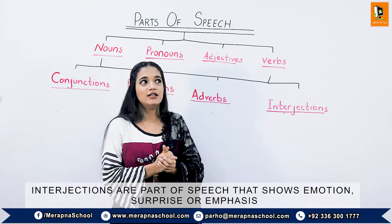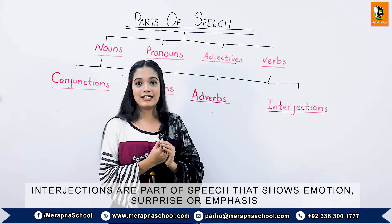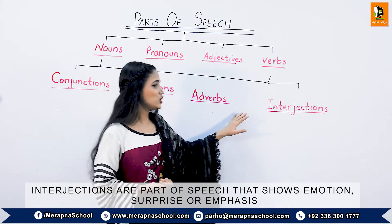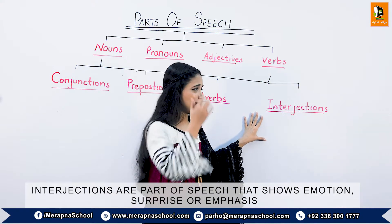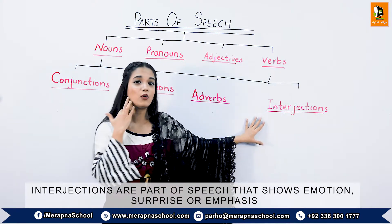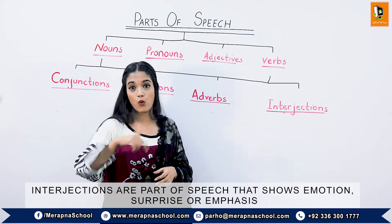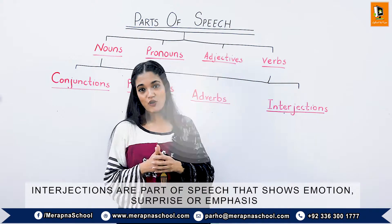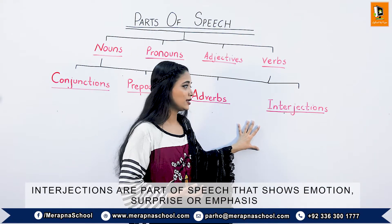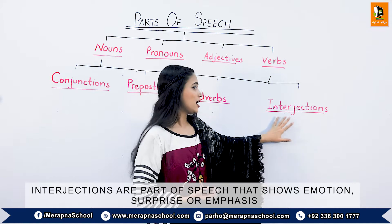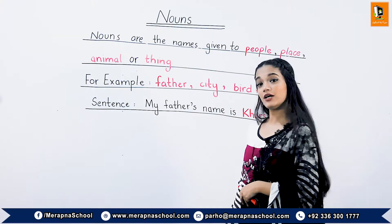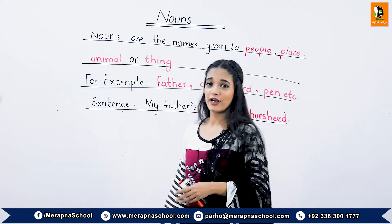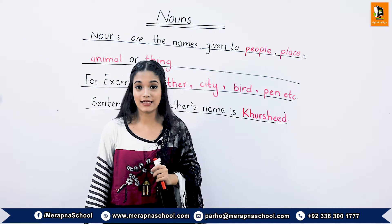Now moving on to interjections. Interjections show sudden emotion or feeling, in phrases like when we see something and we are surprised. We say words like 'wow' or 'hooray.' For example, in the sentence 'Wow! What a beautiful flower,' the word 'wow' is an interjection because it is showing sudden emotion. We always mention an exclamation mark after the interjection.